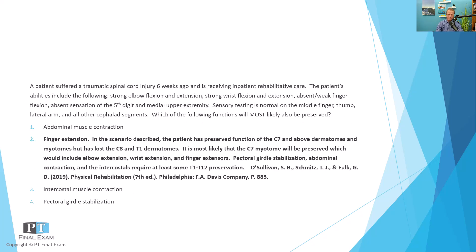The correct answer is finger extension. Strong elbow flexion and wrist extension is classically the C6 myotome. Elbow extension and wrist flexion is the C7 myotome. So C6 and C7 are intact. However, we have absent finger flexion — the long finger flexors on the anterior surface of the forearm are associated with C8. Weakness with C8 is confirmed by absent sensation on the fifth digit and the medial upper extremity, which corresponds to C8 and T1.